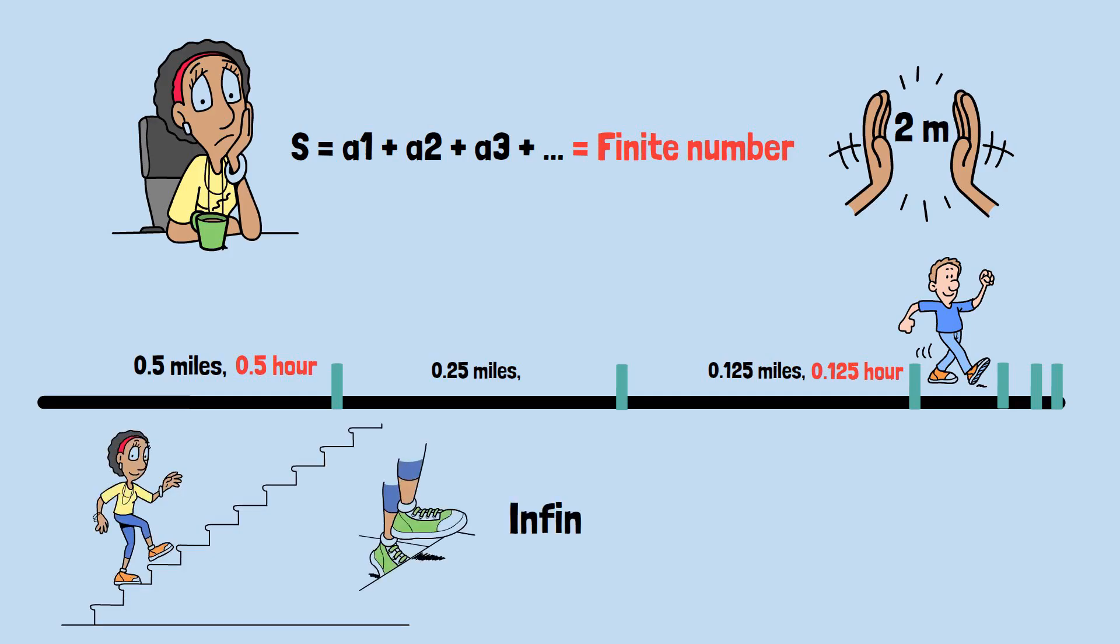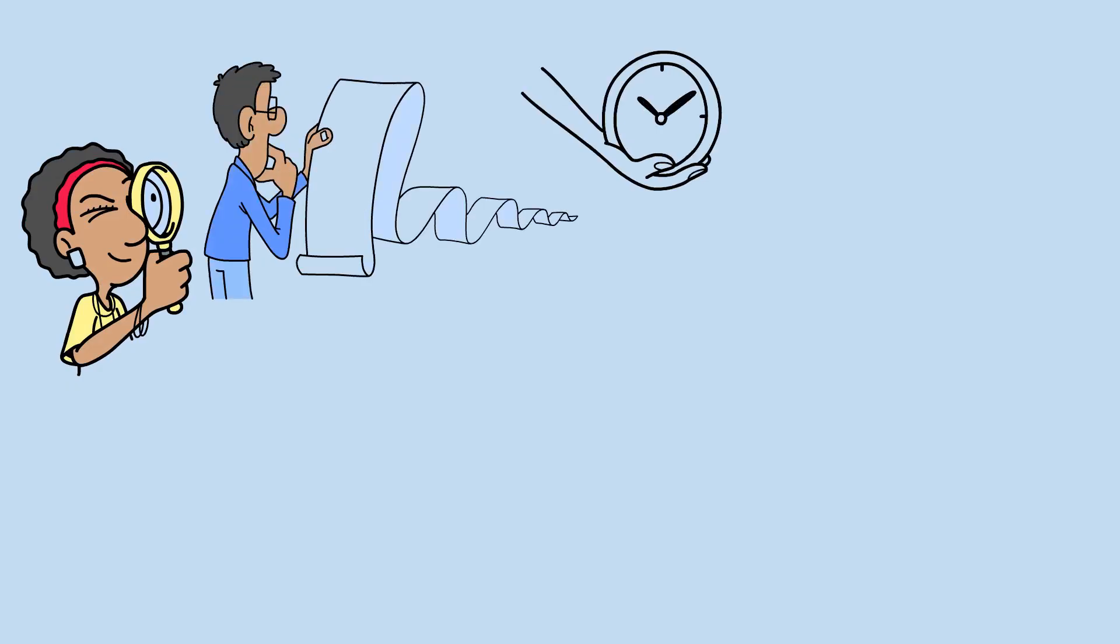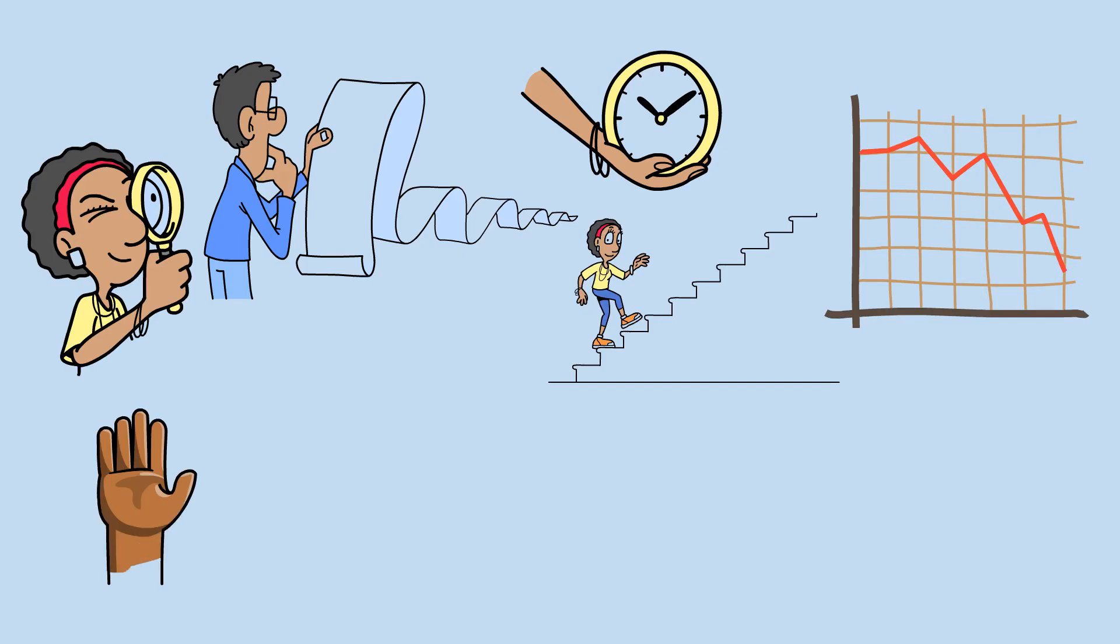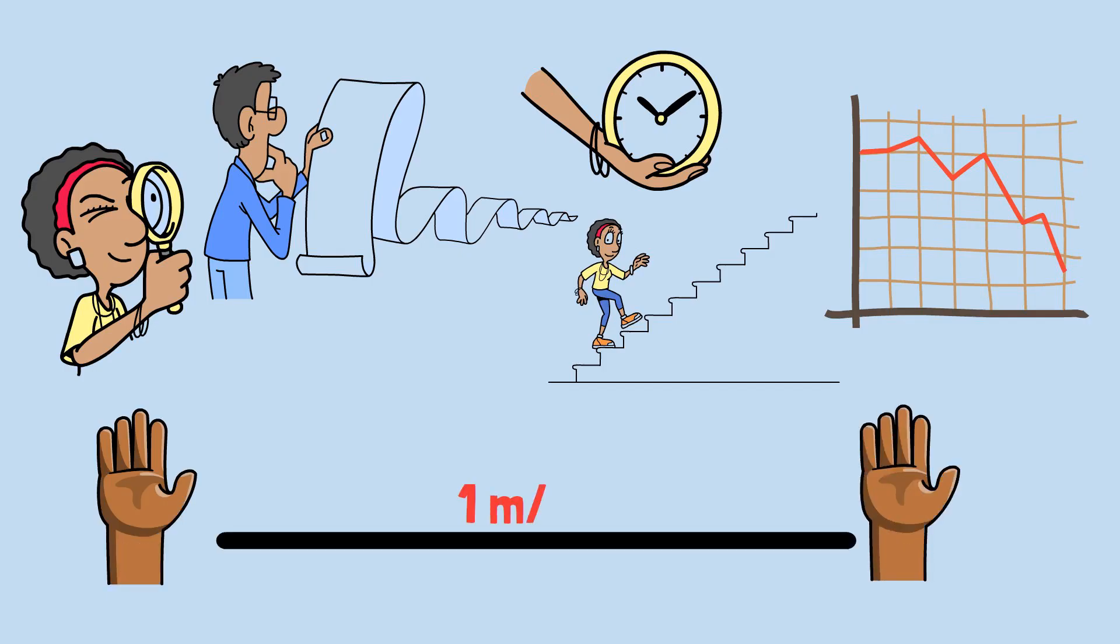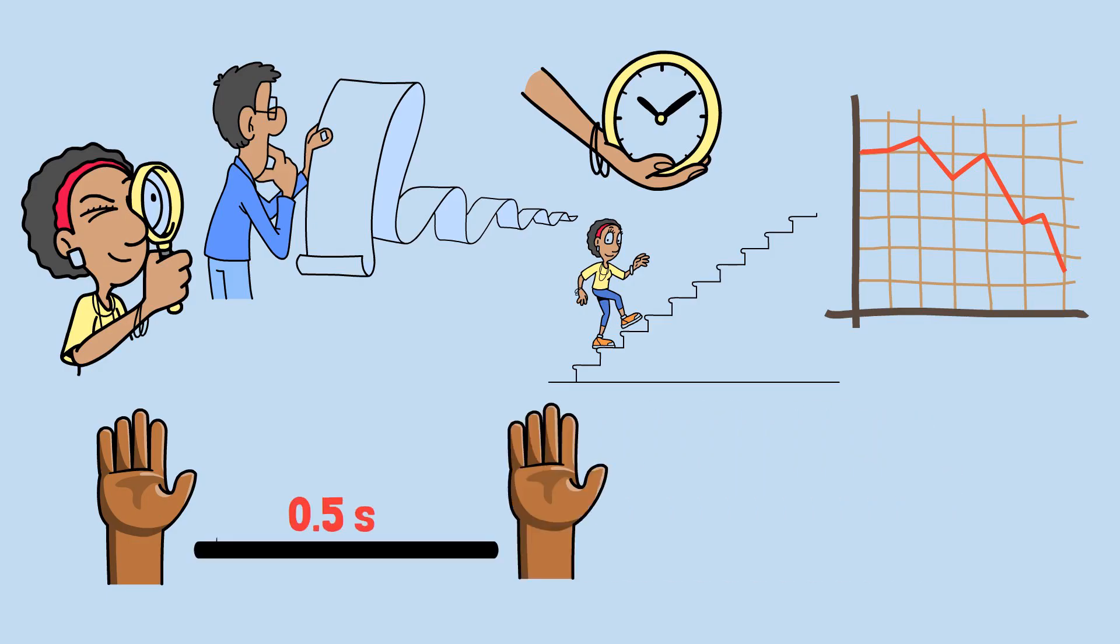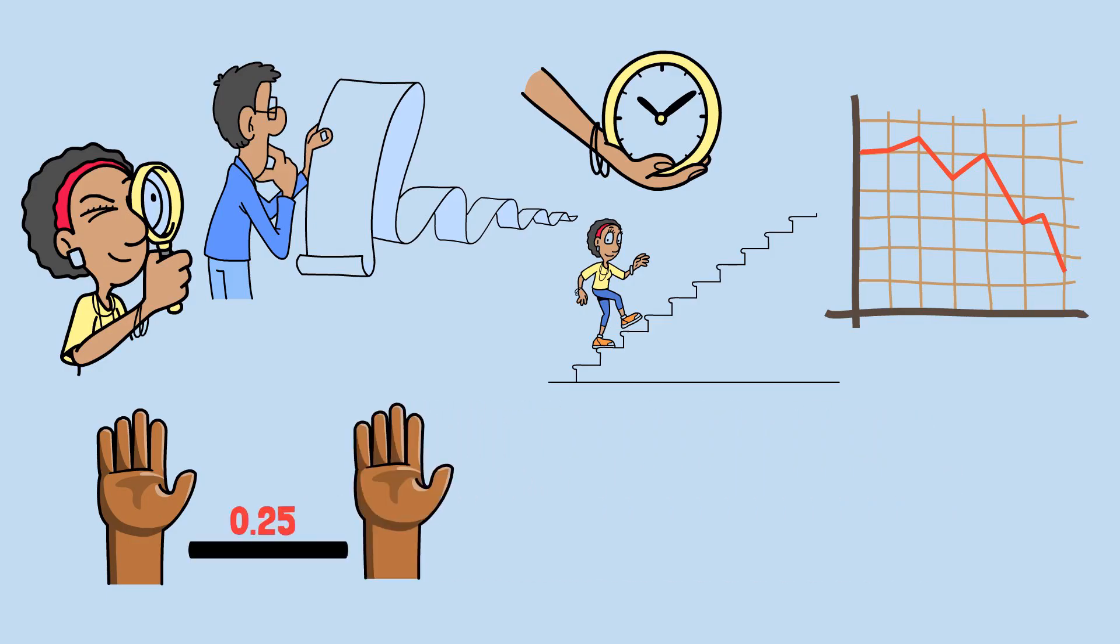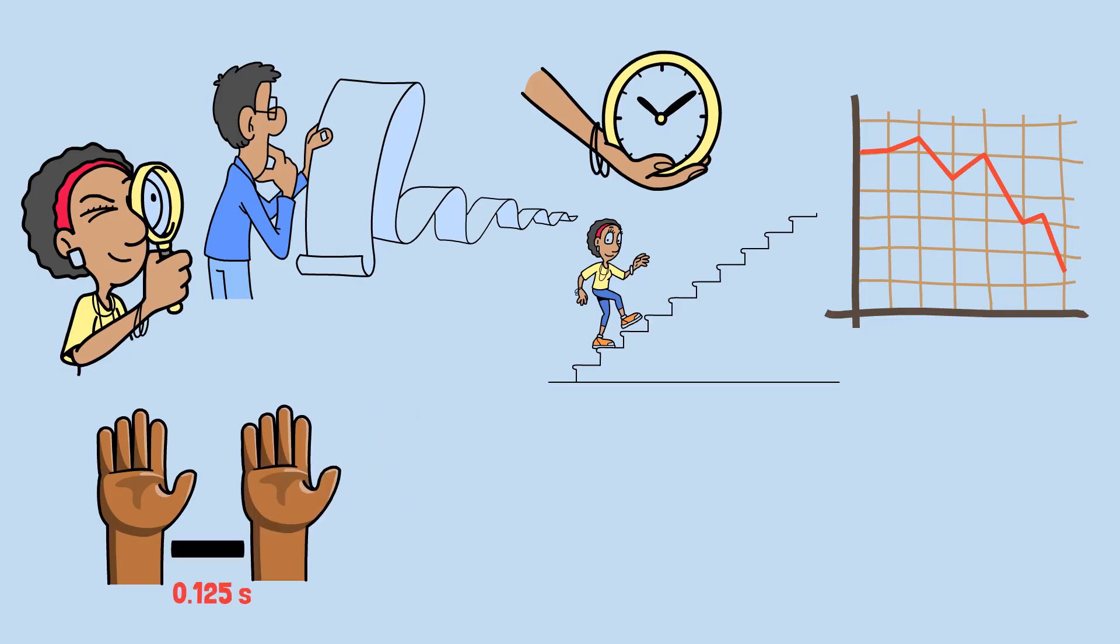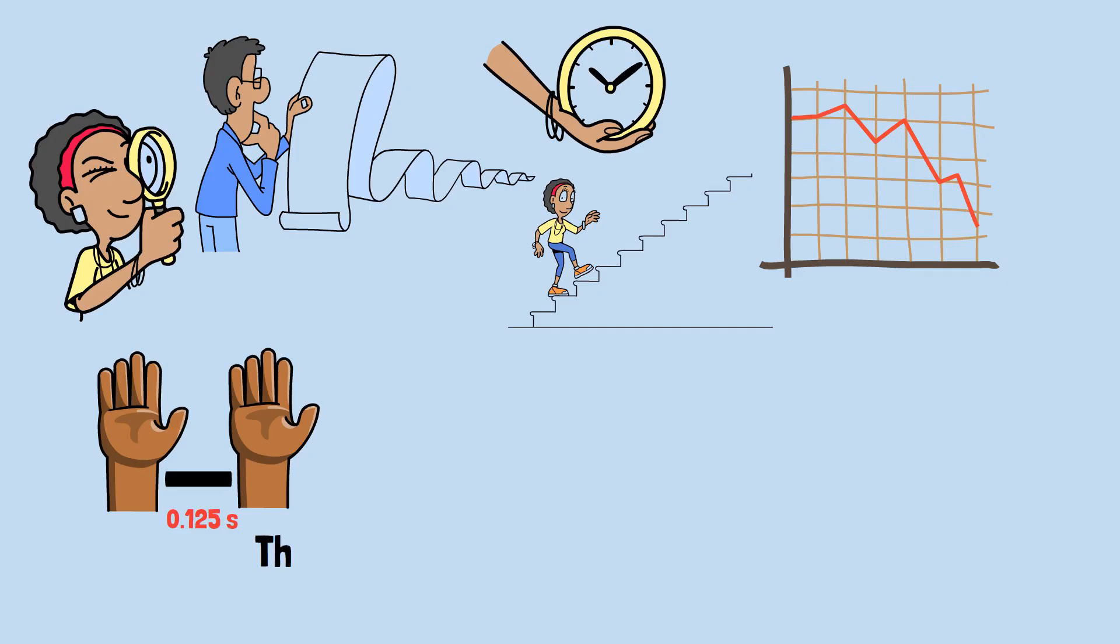Here's the key insight that resolves this: while there are infinitely many steps, each step takes progressively less time. The steps don't all take the same amount of time; they get faster and faster, shrinking towards zero. In our hand clapping example, if you move at one meter per second, the first half meter takes 0.5 seconds, the next quarter meter takes 0.25 seconds, the next eighth meter takes 0.125 seconds, and so on. The total time is 0.5 plus 0.25 plus 0.125 and so on, which equals exactly one second.